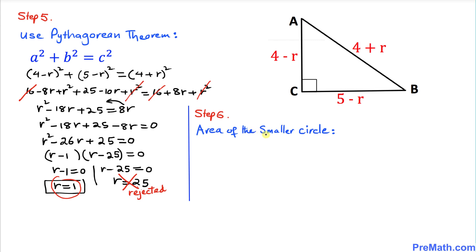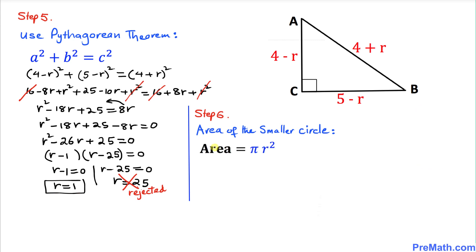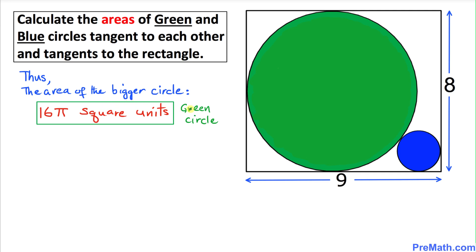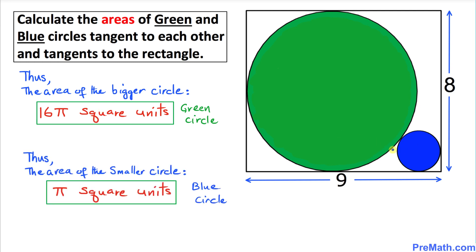Now let's calculate the area of the smaller circle. Using area equals pi r squared, with r equals 1: area equals pi times 1 squared equals pi. The area of the smaller blue circle is pi square units. To summarize: the area of the bigger green circle is 16 pi square units, and the area of the smaller blue circle is pi square units.